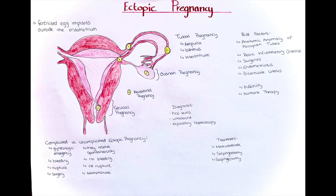We differentiate different types of ectopic pregnancy depending on the location, and different locations bring different risks of complications. The first type is a tubal pregnancy, which occurs within the fallopian tube and is the most common location of ectopic pregnancy.